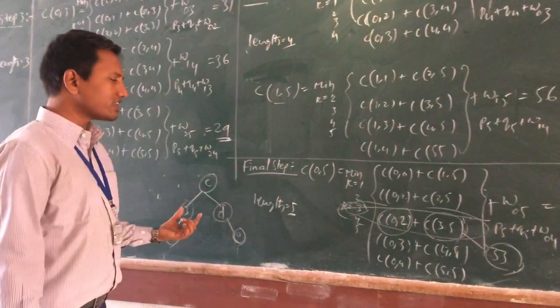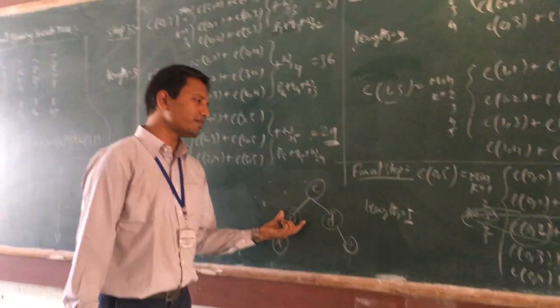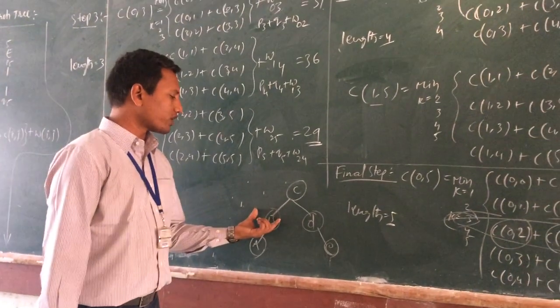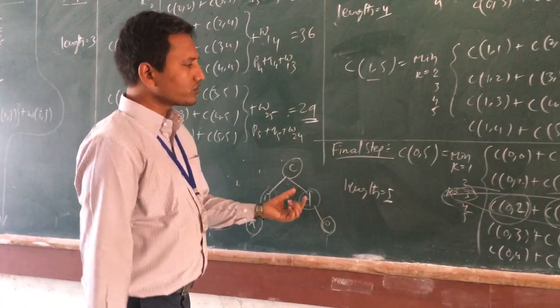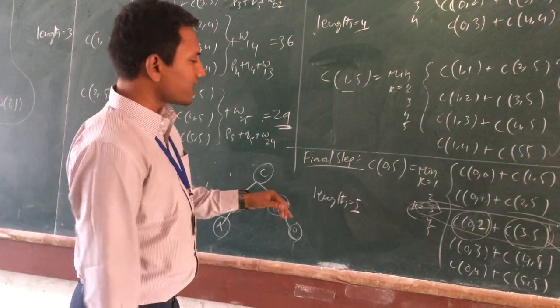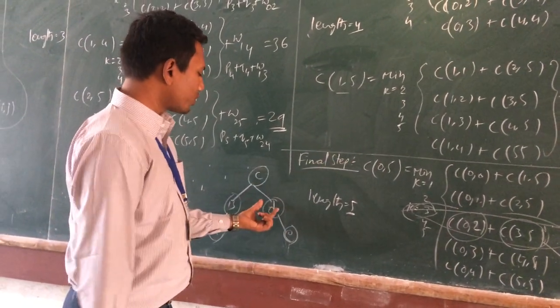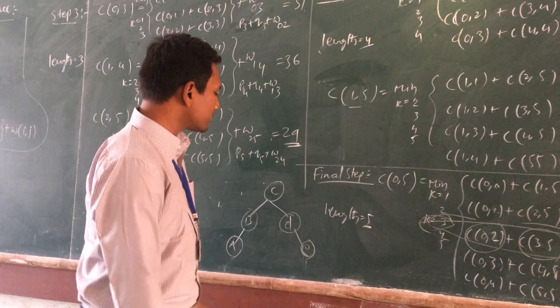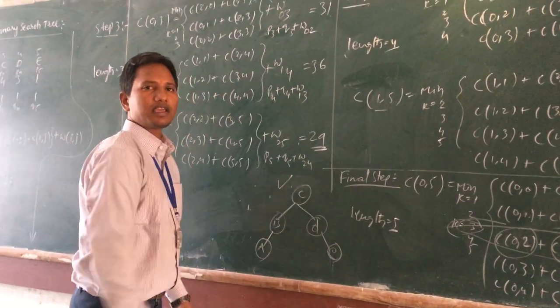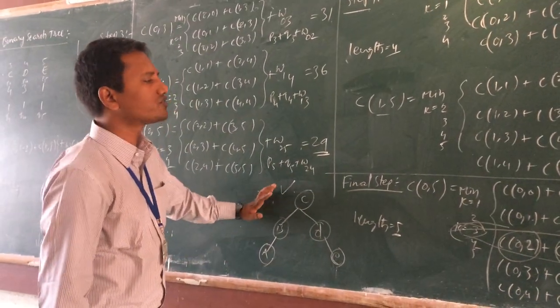We are taking B as the root node. So for 3, 5, 0, 3, D is the root. Like this, we are going to construct the binary search tree, the optimal binary search tree.